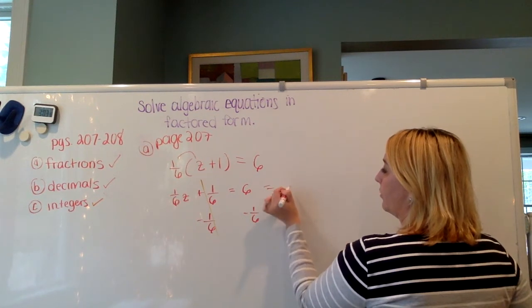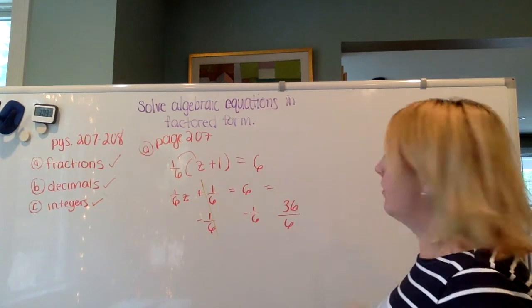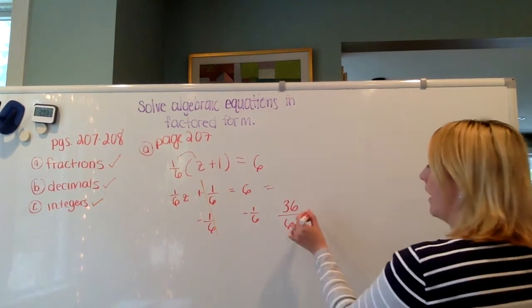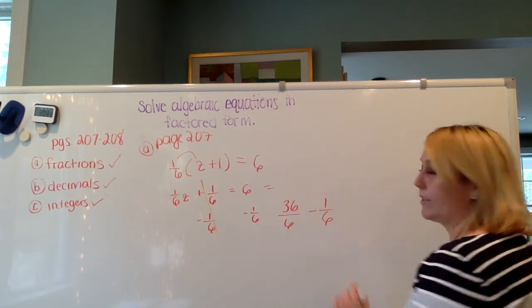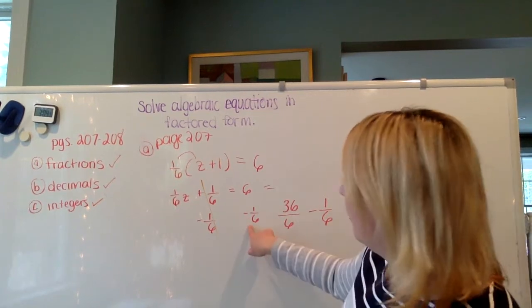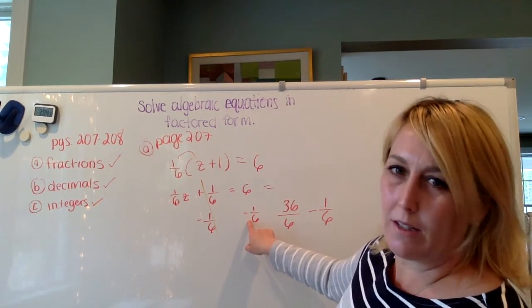So really, 6 is equal to 36/6, right? The 6 that's over here is equal to 36/6. And now I need to take away one-sixth. So I converted 6 into 36/6 because I knew I was going to be taking away one-sixth over here, and so it made it easier.